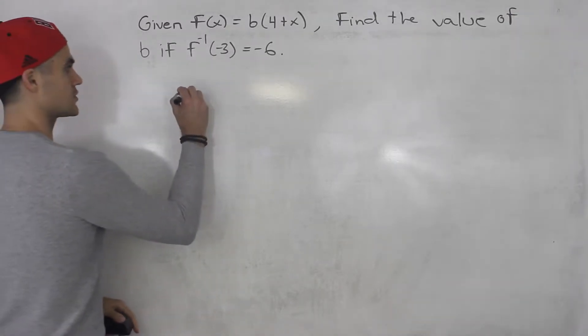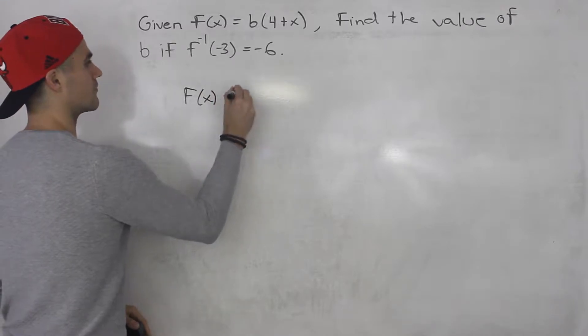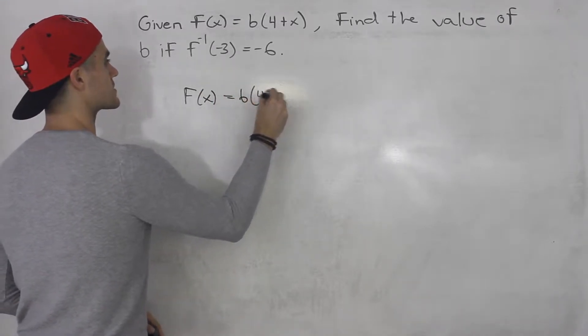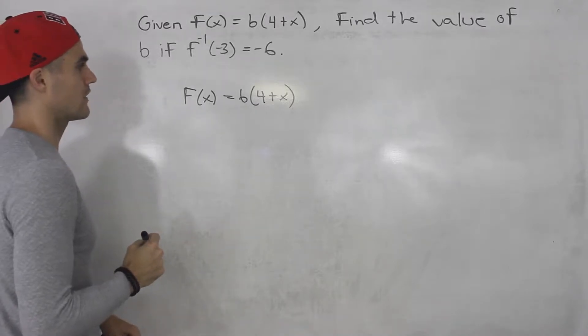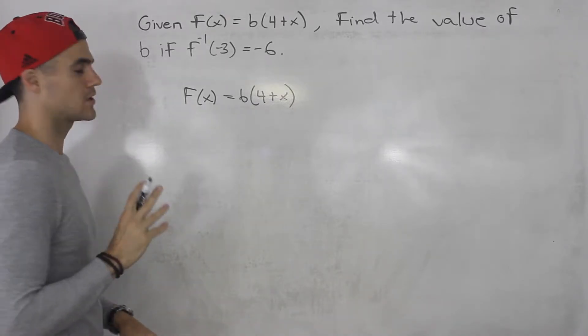So we got this function b(4 + x), but we're given information about the inverse. How can we find the value of b? Now there's multiple ways to do this question.